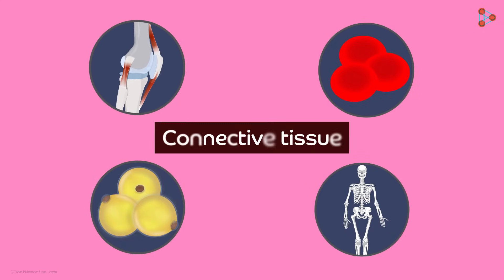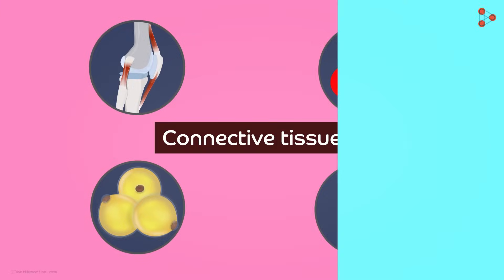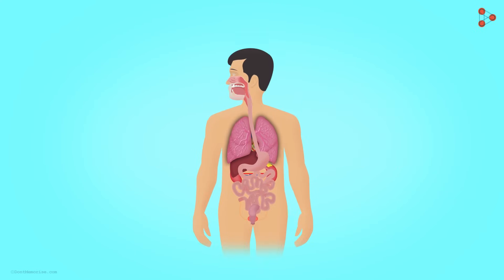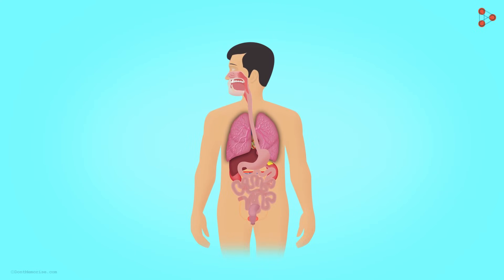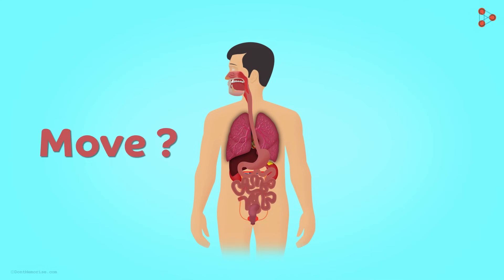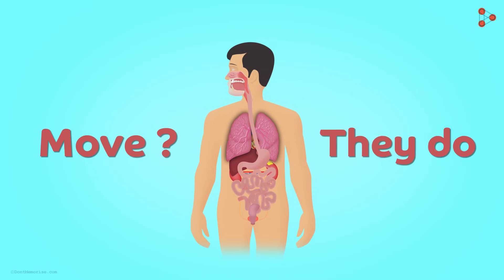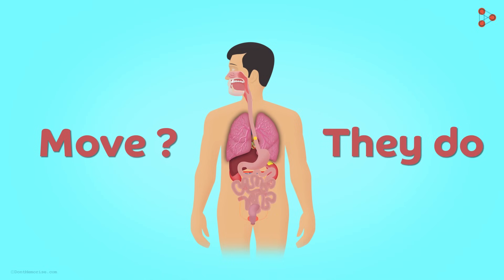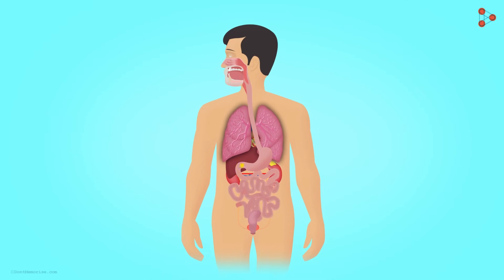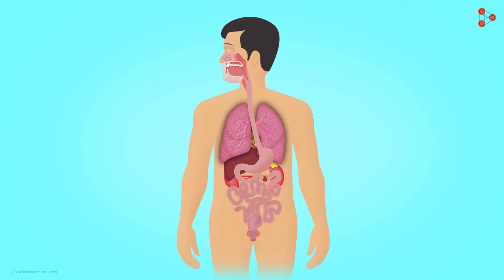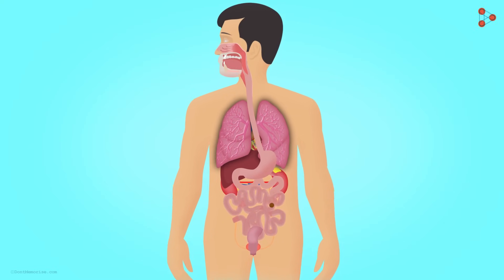In our previous video, we have seen how various parts of the body are connected. Now let's have a look at how animals locomote and how the parts inside our body move. Do parts within us actually move? Of course they do! Although we do not notice the organs inside us bouncing, they all move in some or the other manner.